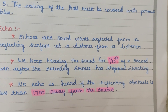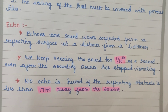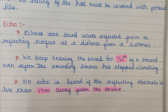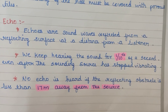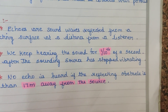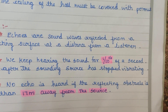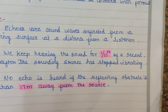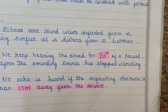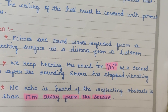No echo is heard if the reflecting obstacle is less than 17 meters away from the source. So if the reflecting surface — for example, a wall — is more than 17 meters away, that is what we call an echo.